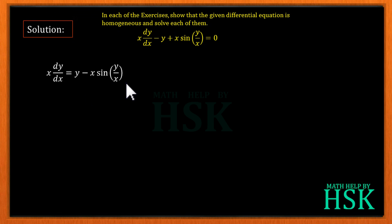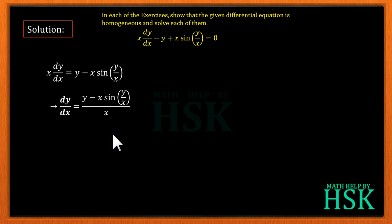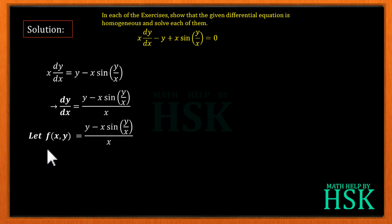First, we take the differential equation and prove that it is a homogeneous equation. To do this, we calculate the value of dy/dx. By cross-multiplying x to the right-hand side, we obtain dy/dx equal to (y minus x sine(y/x)) divided by x.